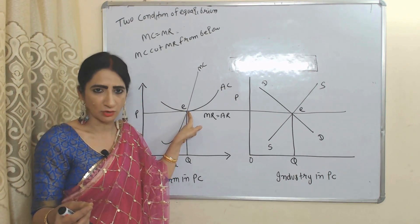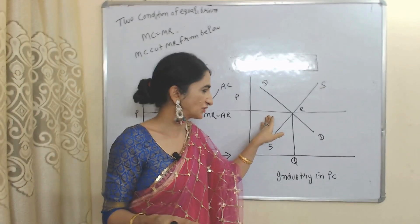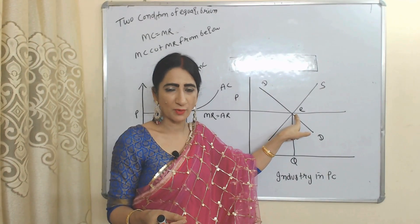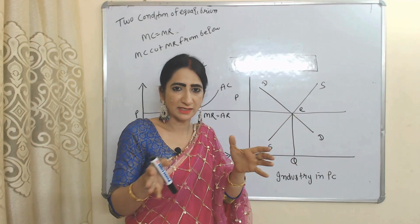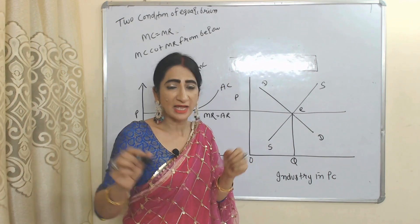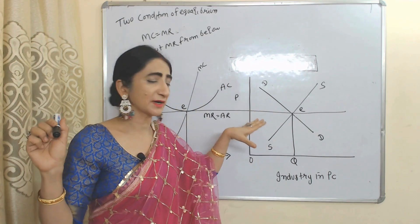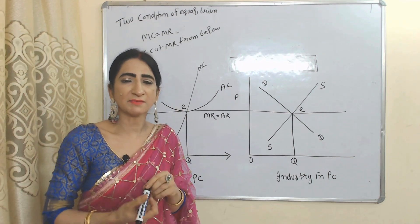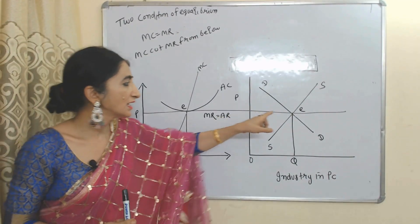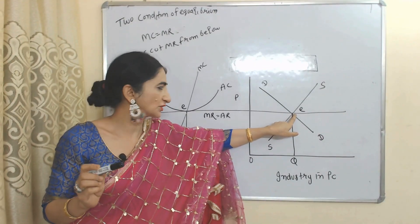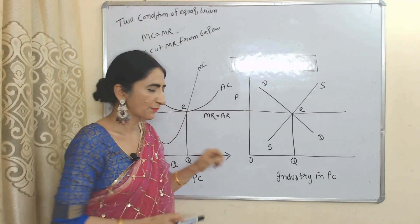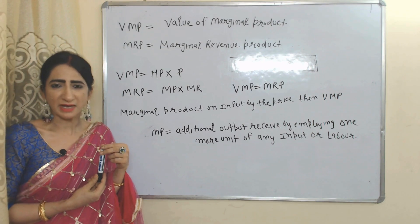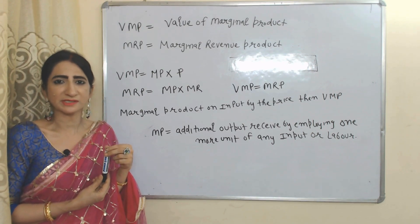At this equilibrium point, a firm is receiving normal profit. Now we will see the equilibrium of the industry. E is the equilibrium point because at this point the demand and supply curves intersect with each other. Under perfect competition, prices are determined by the intersection of demand and supply curves, so E is called the equilibrium of the industry; OP is the equilibrium price and OQ is the equilibrium quantity.